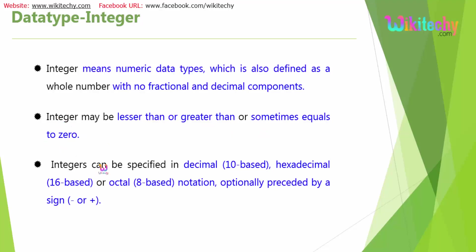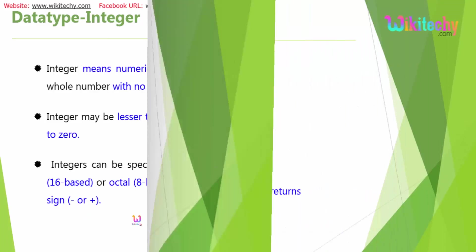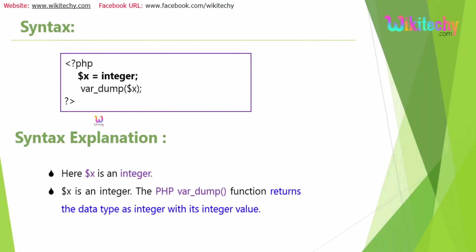An integer can be specified in decimal, hexadecimal, or octal, and optionally preceded by a plus or minus sign. Here is the syntax: $x is equal to an integer value — this is how you declare it in a PHP file.